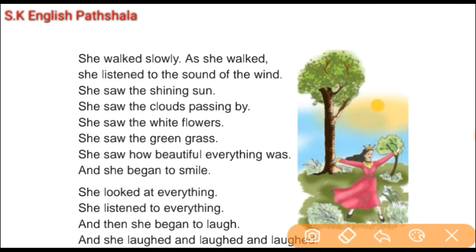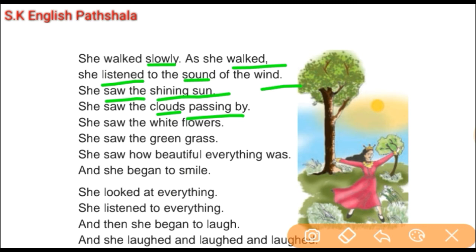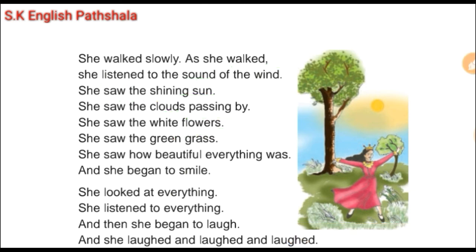She walked slowly. As she walked slowly, she listened to the sound of the wind. She saw the shining sun. She saw the clouds passing by — clouds means above. She saw the white flowers and the green grass, and she saw how beautiful everything was.